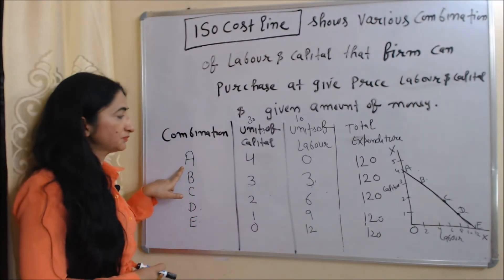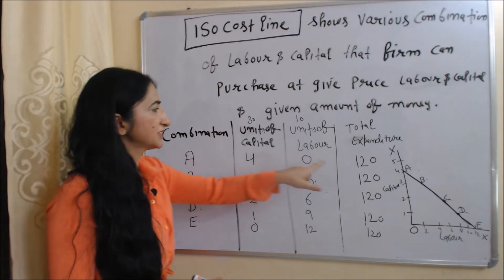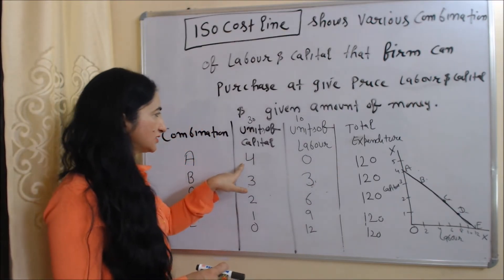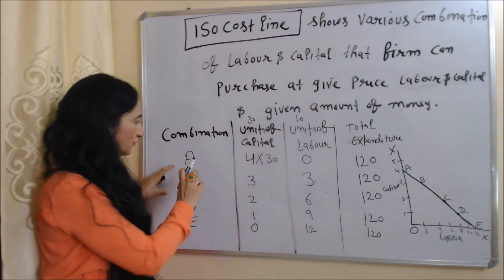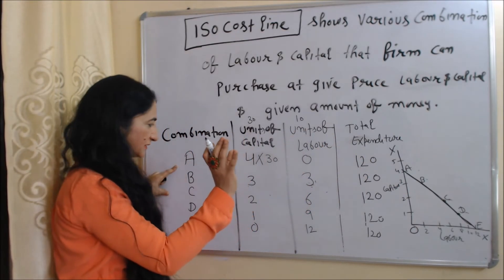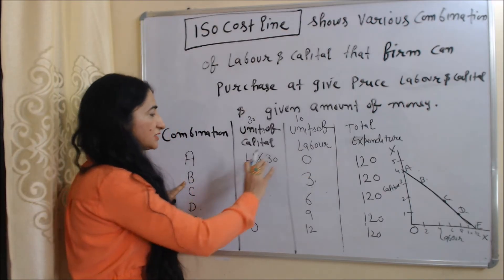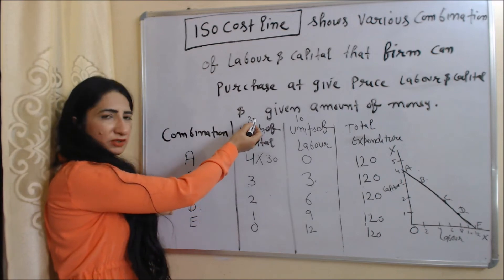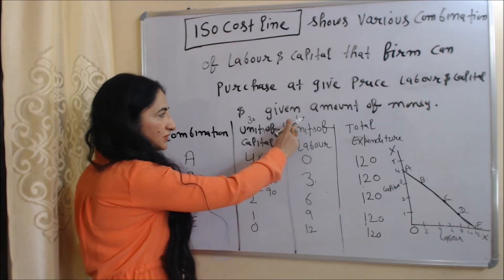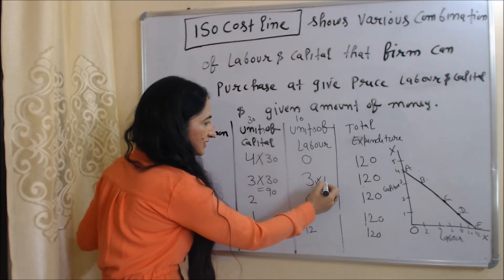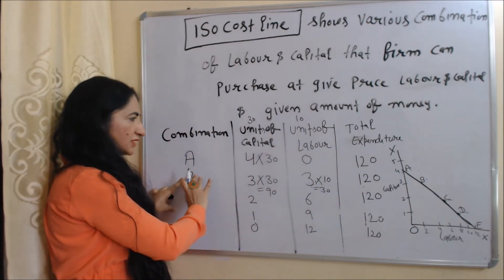At combination A, the producer is buying four units of capital and zero units of labor, costing 120 rupees (4 × 30 = 120). At combination B, the producer is buying three units of capital and three units of labor: 3 × 30 = 90 plus 3 × 10 = 30, totaling 120 rupees. So the cost of combination B is also 120 rupees.